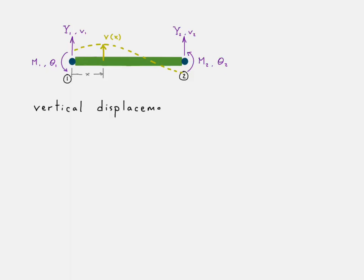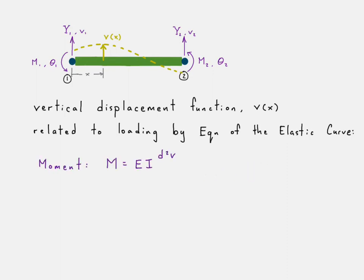So, we have our vertical displacement function, and it's related to the loading by the equation of the elastic curve. You might remember this from Mechanics of Materials, where we have our moment equal to elastic modulus times the area moment of inertia multiplied by the curvature of the beam. Remember that V is the displacement, dV/dx is the slope, and d²V/dx² is how fast that slope changes as you move through X. And so we would call that the curvature.